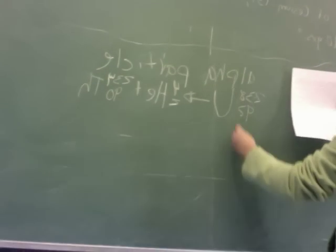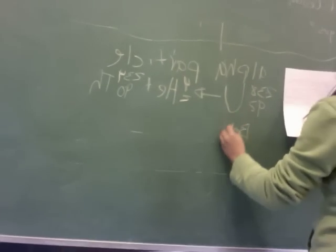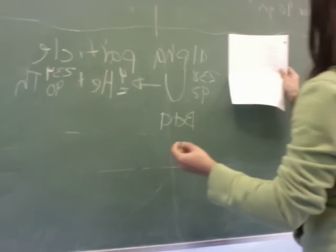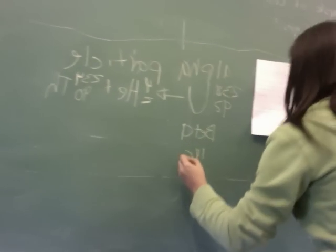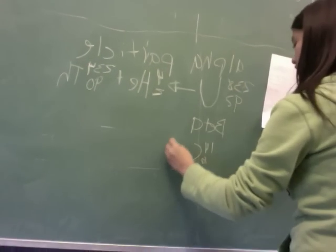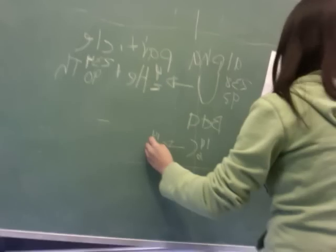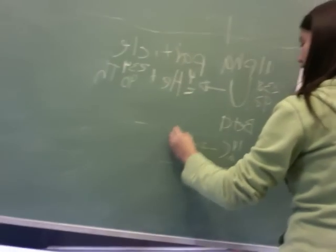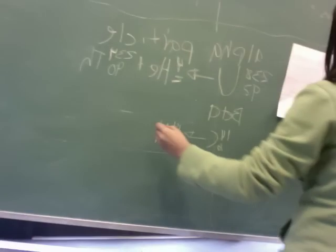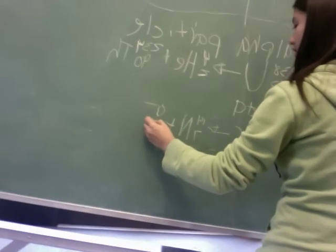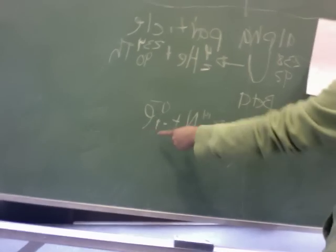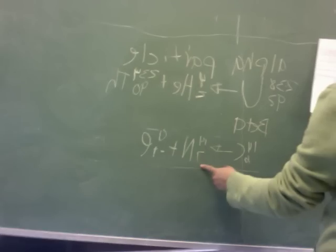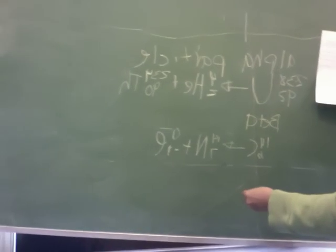So the beta radiation is, let's say, carbon 14 over 6. So it goes to 14, 7 nitrogen, and then plus 0 over negative 1 electron, that's the beta emission. And that also makes it stable.